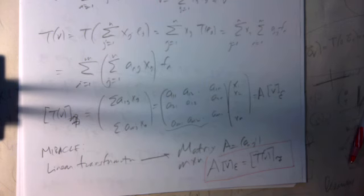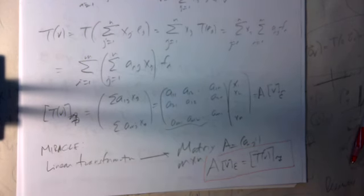A student asks about the first proof done earlier — the proof that for any linear transformation, dim(ker T) + dim(image T) = dim(V). The professor confirms and prepares to go through it again, noting this is actually the third time — once this morning and once already in this session.